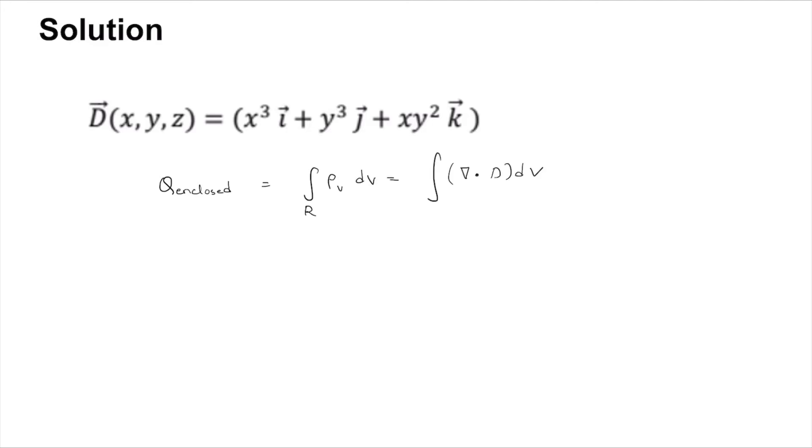What is ∇? We know D vector. ∇ vector is ∂/∂x î + ∂/∂y ĵ + ∂/∂z k̂. So you do ∇ dot D vector as you would do any dot product.